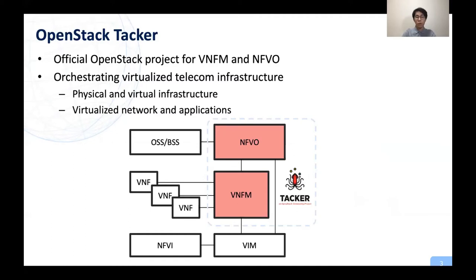One of the main features of TACA is orchestrating virtualized infrastructure, especially for telecom, including physical infrastructure. NFV-O in TACA cooperates with OSS, BSS, VNF manager, and VIM. VIM means Virtual Infrastructure Manager, responsible for controlling computing resources — OpenStack or Kubernetes in this context. OSS is the operational support system and BSS is the business support system. The VNF manager has responsibility for managing VNF as named.